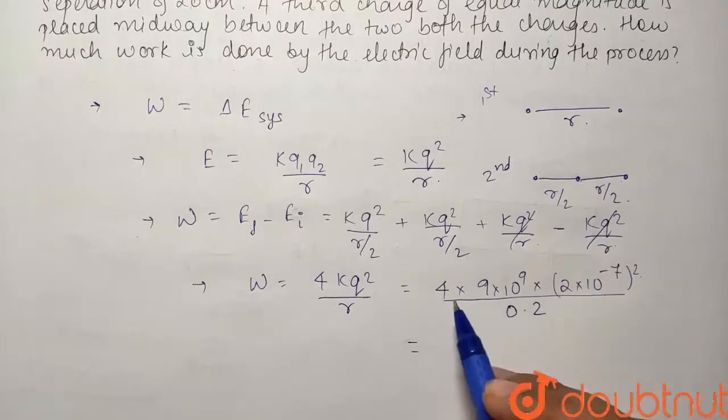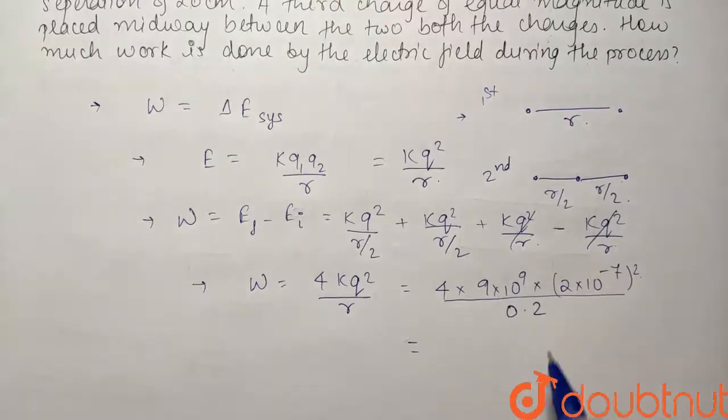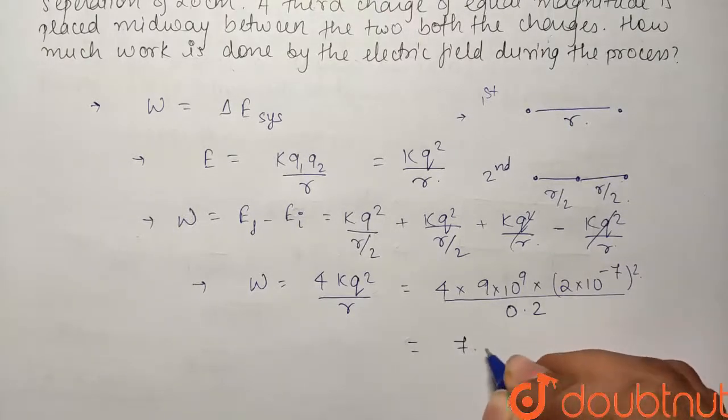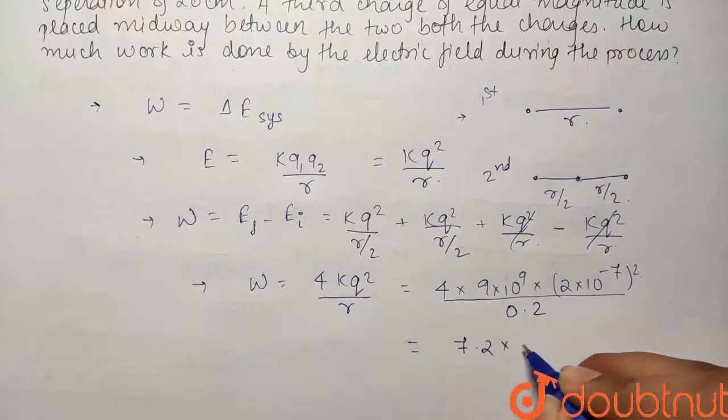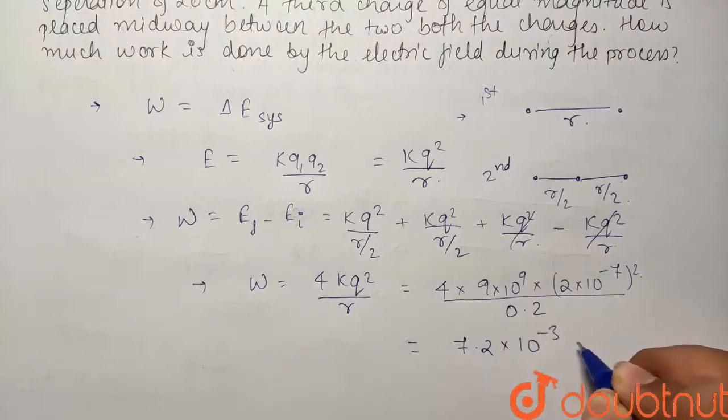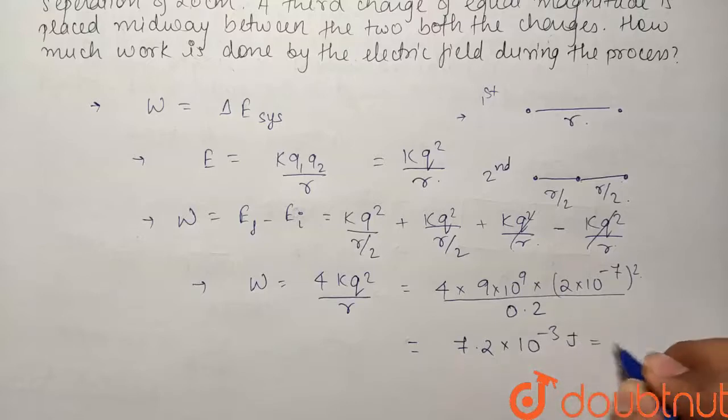This will become 4 multiplied by 4, that is 16 multiplied by 9 divided by 2. So it becomes 7.2×10⁻³ joules. So basically it equals 7.2 millijoules.